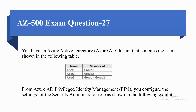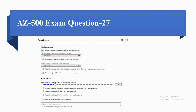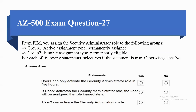Coming to the next question. You have an Azure Active Directory tenant containing users as follows: User 1 is a member of Group 1, User 2 is a member of Group 2, and User 3 is a member of Group 1 and Group 2. From Azure AD PIM, you configure settings for the Security Administrator role. From PIM, you assign the Security Administrator role to the groups: Group 1 with Active assignment type — Permanently Assigned; Group 2 with Eligible assignment type — Permanently Eligible. For each of the following statements, select Yes if the statement is true, otherwise select No.